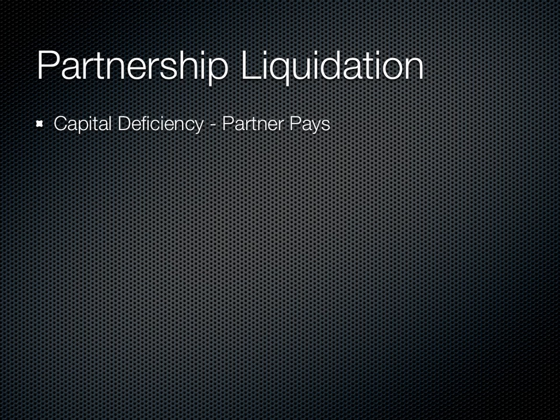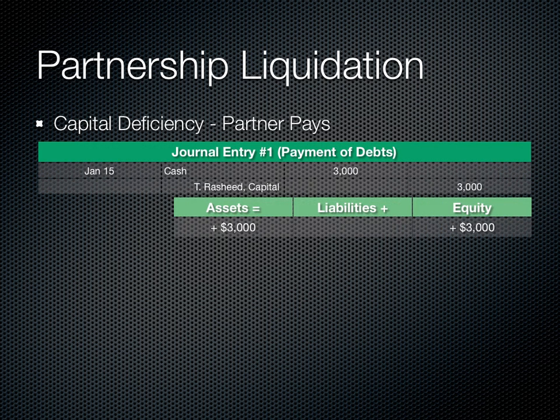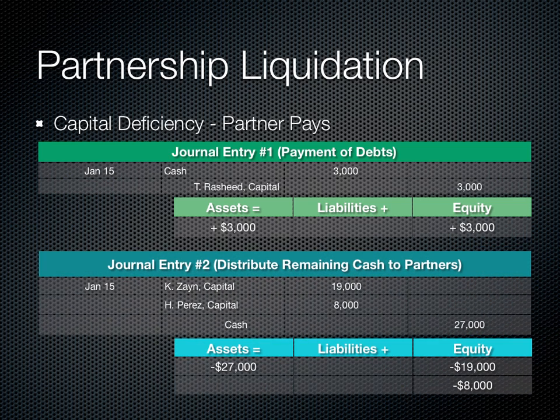In these next two scenarios, we assume that Rashid has a capital deficiency — in other words, the encumbrances of the business exceed his capital contribution. In journal entry one, we see him contributing $3,000 of his personal funds into the business in order to cover the capital deficiency. Then in journal entry two, we distribute the cash to the remaining partners.